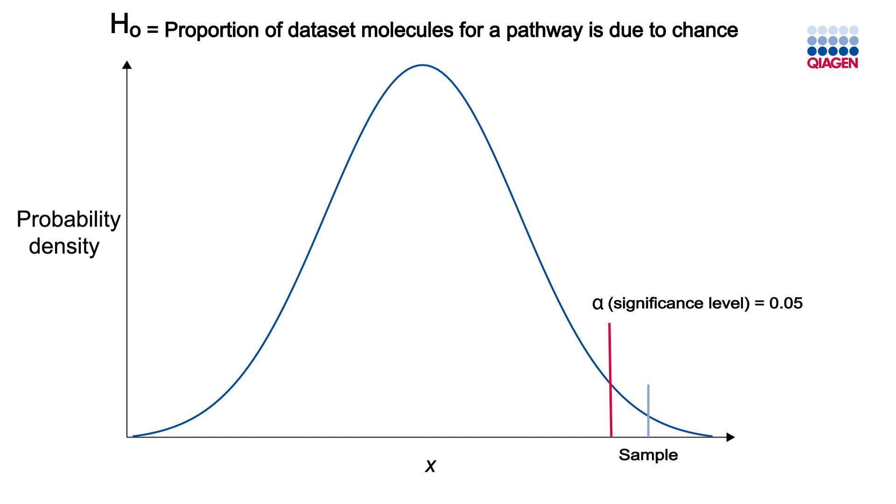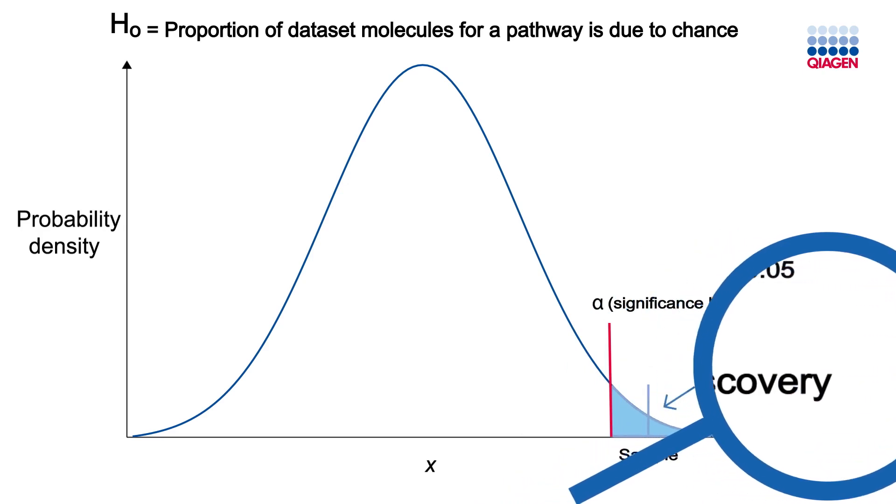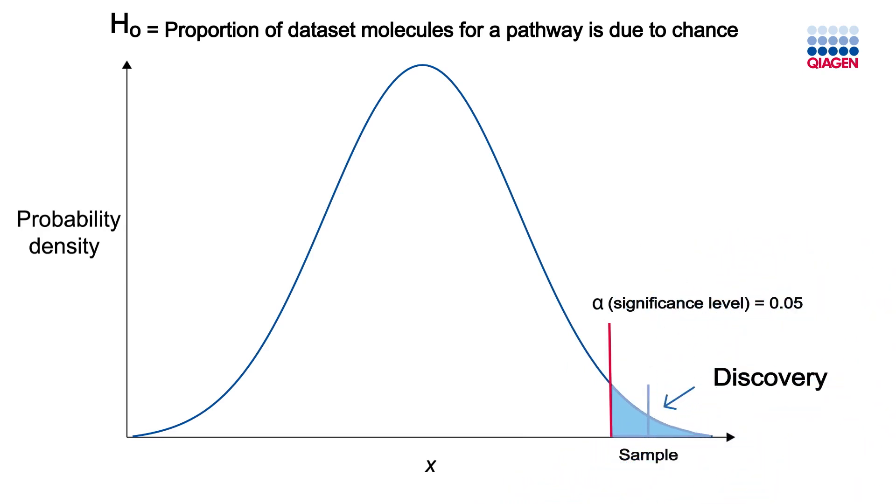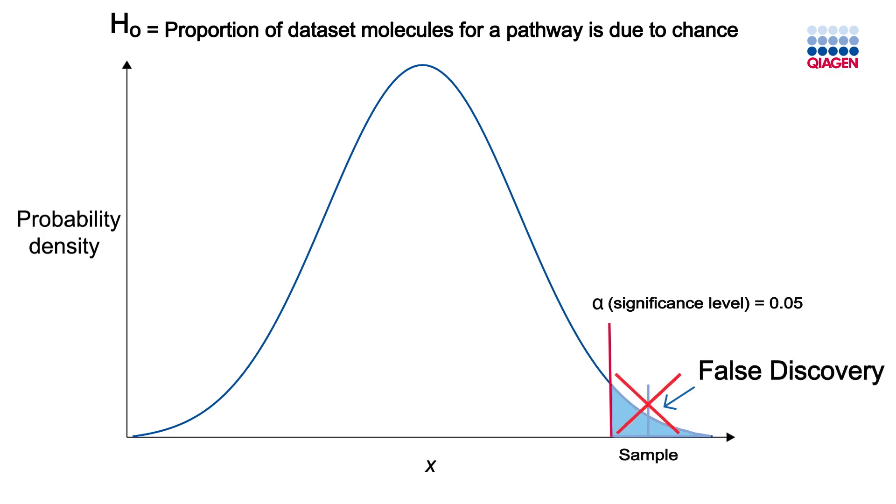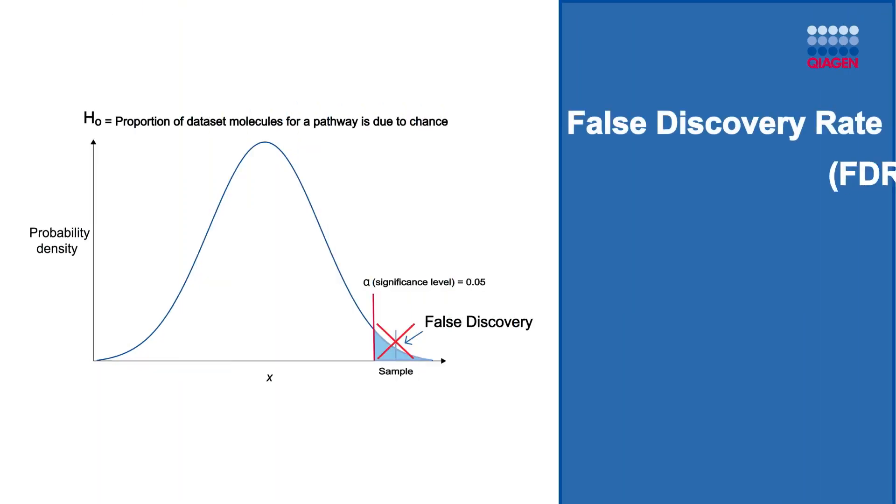Instead of controlling for the family-wise error rate, you can instead call each rejected null hypothesis a discovery. An example of a discovery would be finding that the oxidative phosphorylation pathway is significantly enriched in the treated mice compared to untreated mice. Any false positives would be called false discoveries. The false discovery rate, also known as the FDR, seeks to find the expected proportion of false positives among all the rejected, in other words, significant, hypotheses.